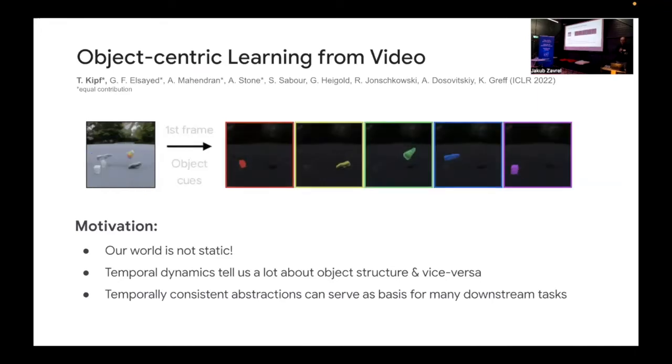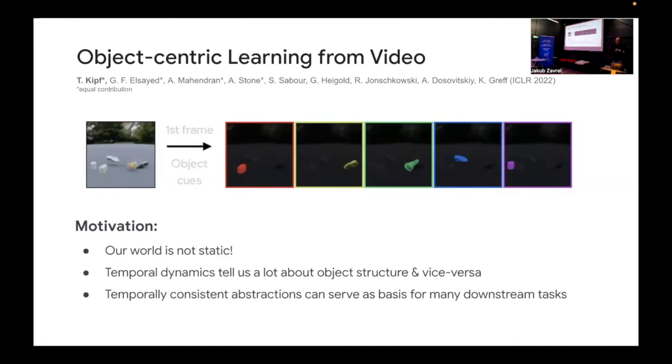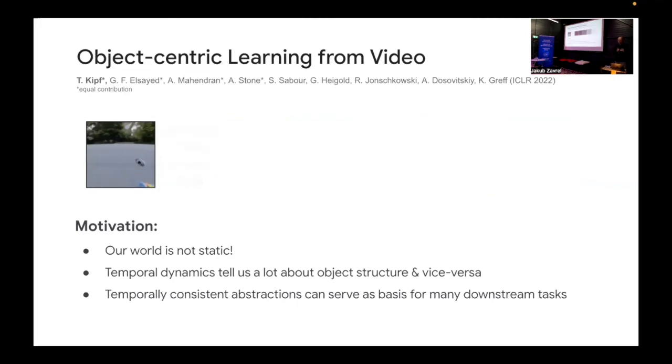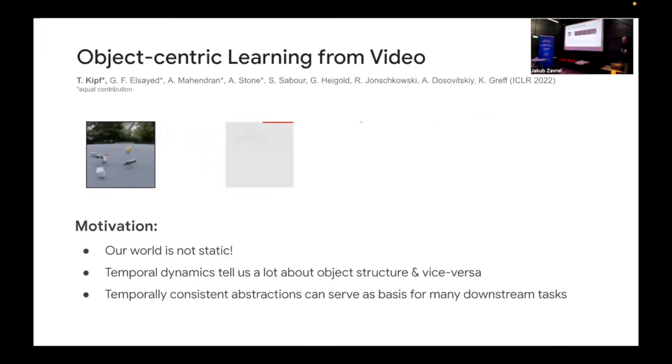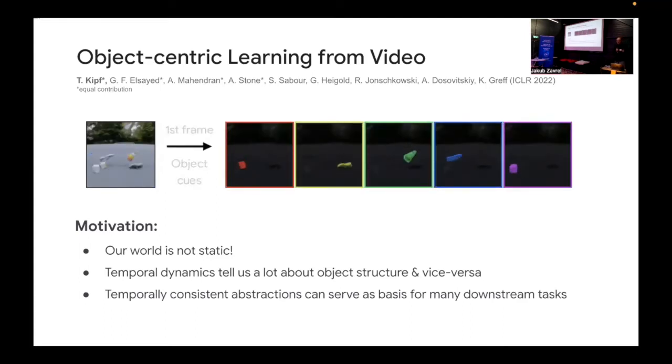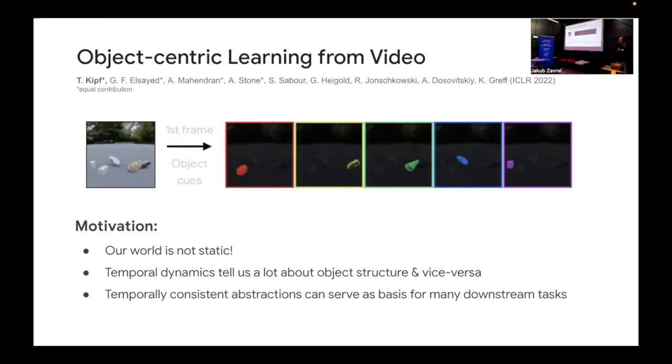And now the question is how can you scale this to more interesting problems? Static images are nice and interesting, but ultimately we care about modeling the visual world and especially the dynamical visual world. Because our world is not static and also temporal dynamics tells us a lot about object structures. So you might have heard about Gestalt principles where things that move together are perceived as grouped together. And a lot of these kinds of inductive biases that we have, we also see fall out just by these very simple inductive biases implemented in these models. And then effectively what these models learn is they learn to cluster things that move together just by the simple permutation invariant bottleneck. And so ultimately these temporally consistent abstractions can also serve as a basis for many downstream tasks. If you want to predict the future, if you want to perform some kind of visual reasoning tasks on top of it, it can be very helpful to have an abstraction of a scene that really crisply identifies the individual objects.